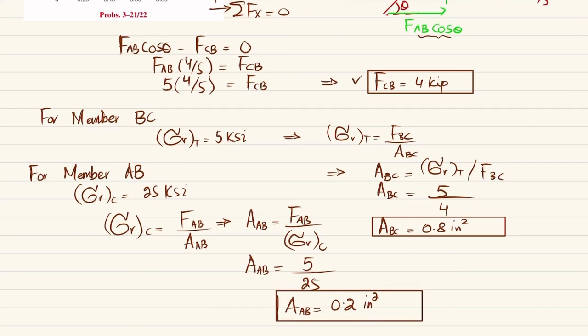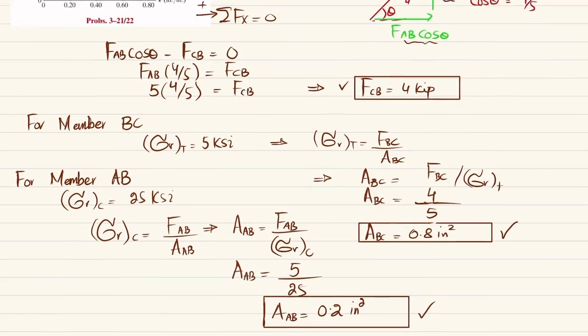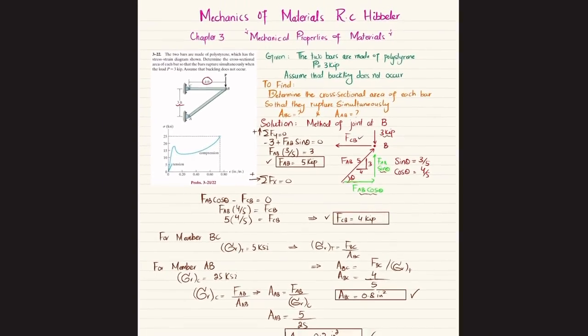Similarly you can also rectify the earlier calculation. FBC was 4 divided by 5, which gives you 0.8 square inches. So this is the area of bar BC and this is the area of bar AB which will rupture simultaneously under a given load of P equal to 3 kips.